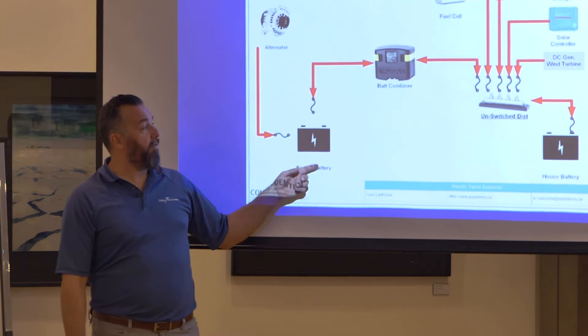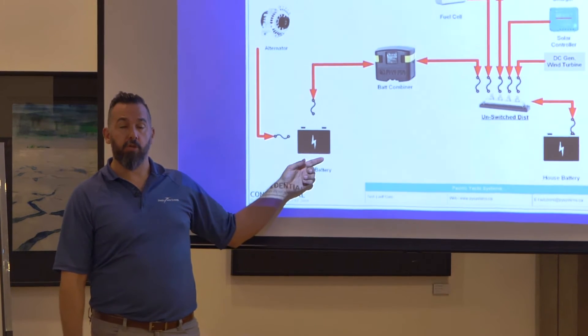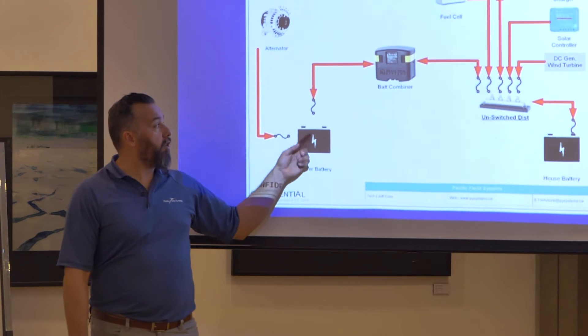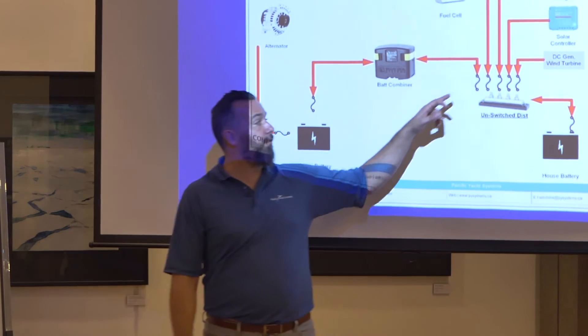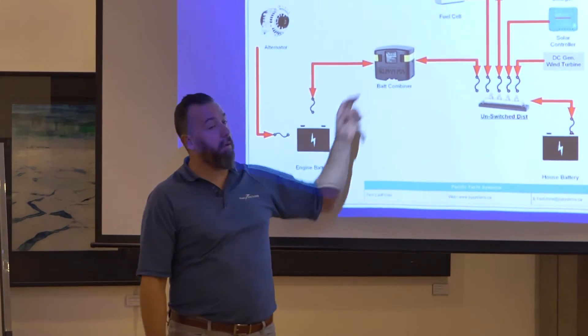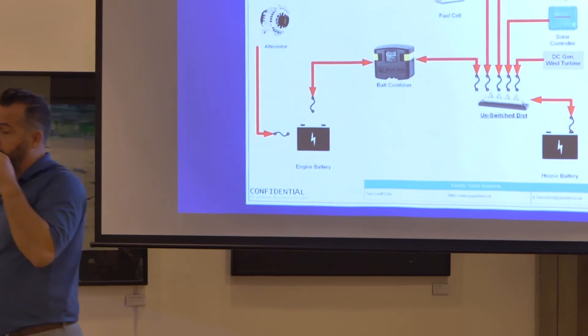So either you put a voltmeter on this so you know it's getting a charge, which ideally you should, or you constantly check that fuse to make sure that it doesn't blow. And you have to check both this circuit and this circuit right here. This will not blow. It just won't. Never seen it. It can, but never has in my experience.